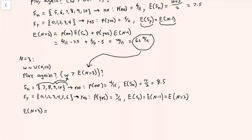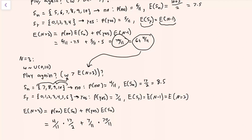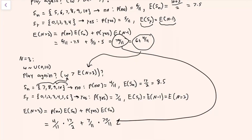Now we have the pieces needed to find the expected value of this game with three rounds available. That'll be the probability that on this first round we decide to end the game times the value of that world, plus the probability we choose to play again times the value of that world. Plugging in numbers — the 70 over 11 came from the expected value of the game with two rounds left.